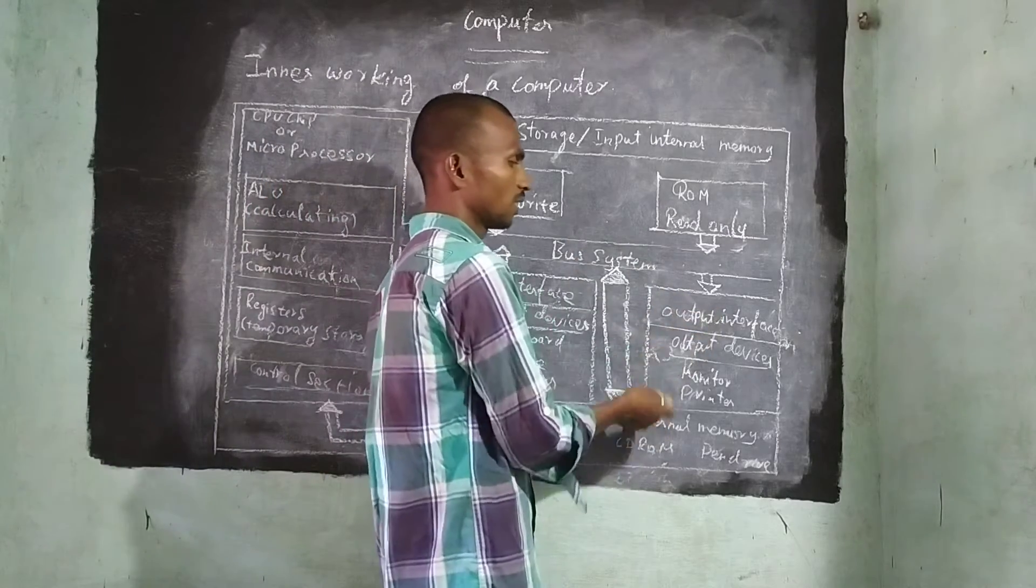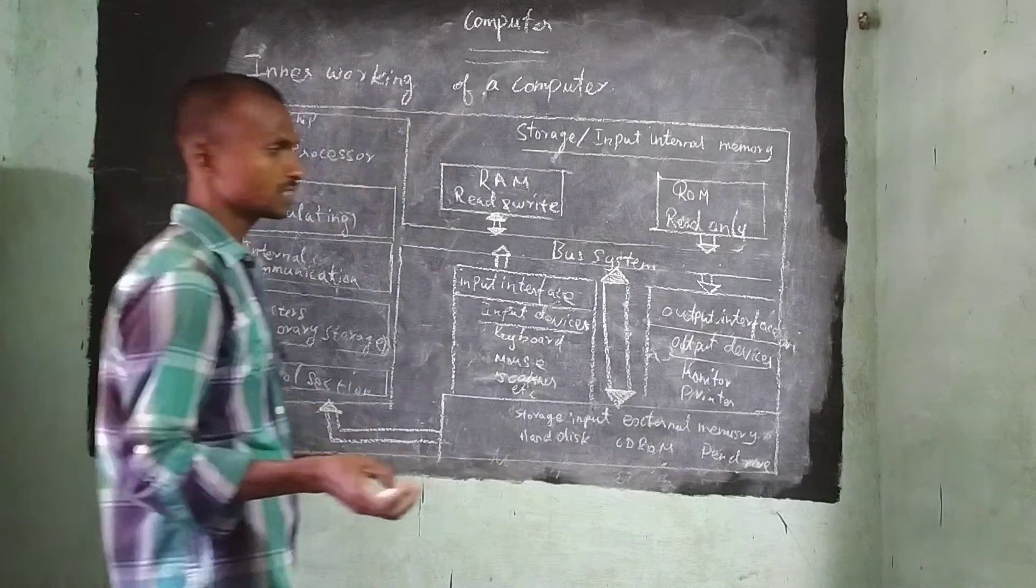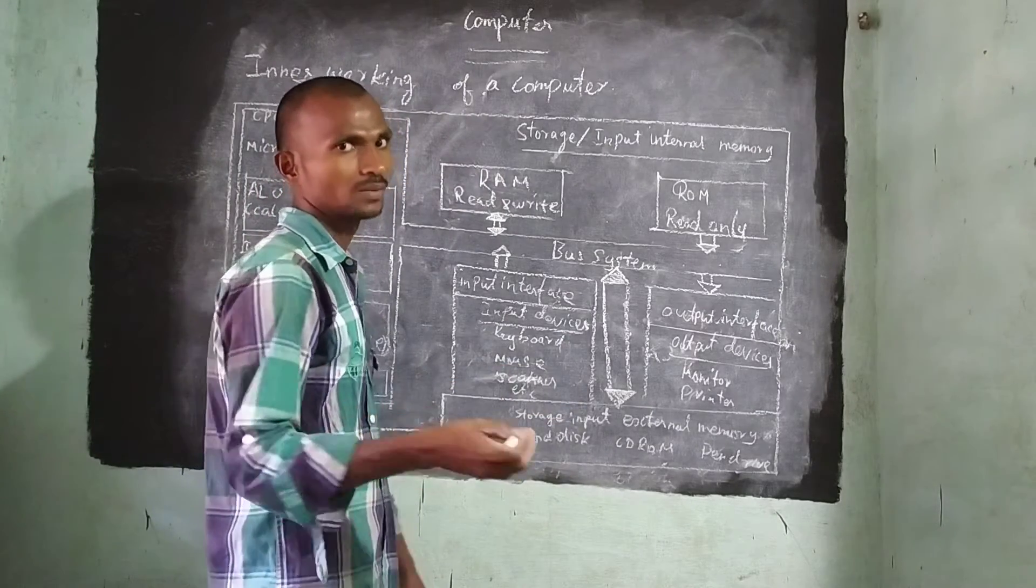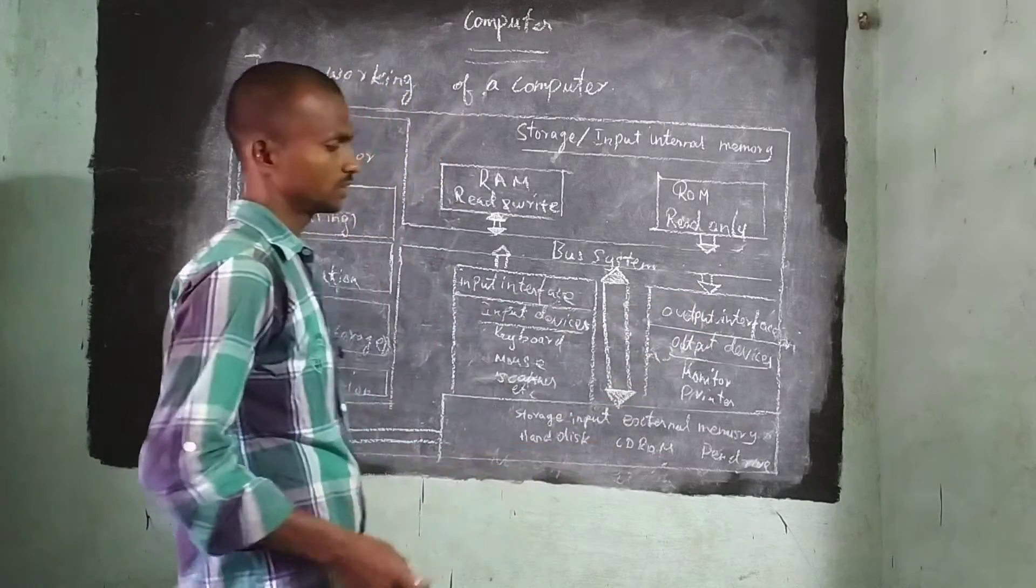Next. Output devices or output interface. What are the output interfaces? Monitor, Printer. Next, Projector we are using. So this and all comes under the output devices.